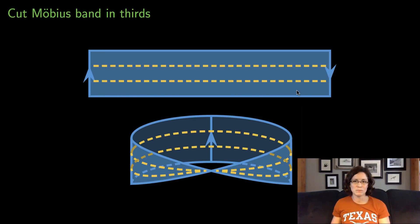And so you can get from the top strip to the bottom strip just by walking. But you can't break into that middle piece. And so that's one way to see that when you cut the Mobius band in the thirds, you actually get two separate loops.